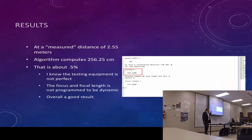The results, this is only my best result. At a measured distance of 2.55 meters, the algorithm computes 256.25 centimeters. So about 0.5 percent error. However, I have to say, this is my best result. The average is around 6 percent error. And if you go on a more dramatic change, it can be fixed.